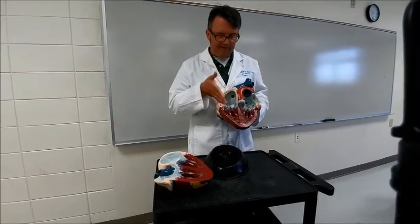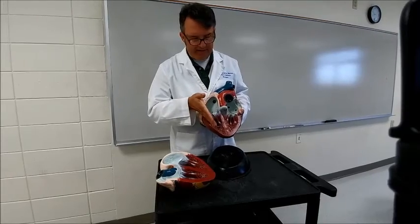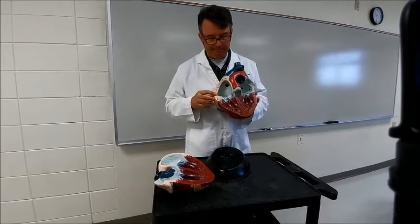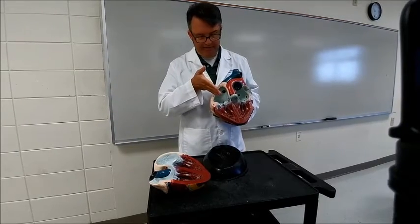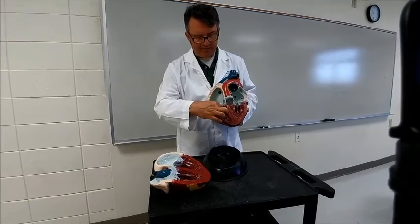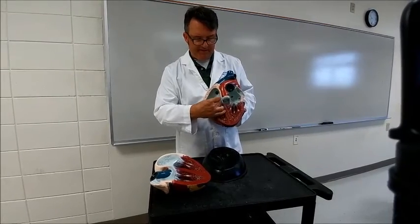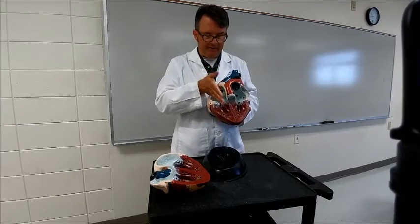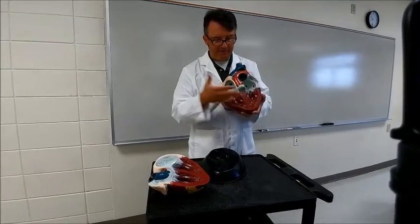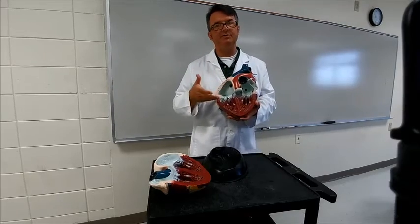Blood is forced from the atria into the ventricles through atrioventricular valves. As blood goes from the right atrium into the right ventricle, notice there are little cords — they look like parachute strings — attached to little muscles called papillary muscles. This prohibits the valve from prolapsing backward. When the blood is forced through and the blood pressure inside the ventricle gets high, it slaps that valve shut. When both AV valves slam shut simultaneously, that is the first heart sound.